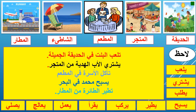A-shati' — the beach. Al-matar — the airport. Now let's get some verbs that help us describe the places around us.